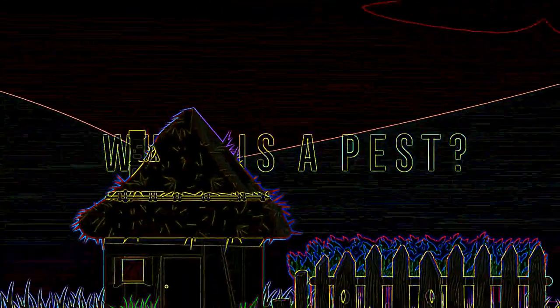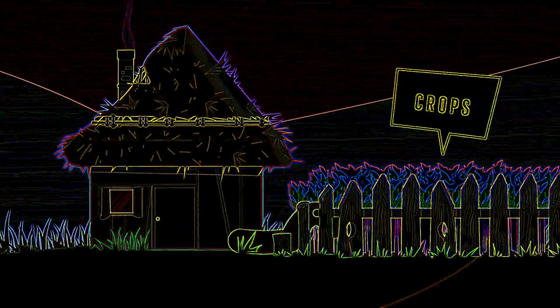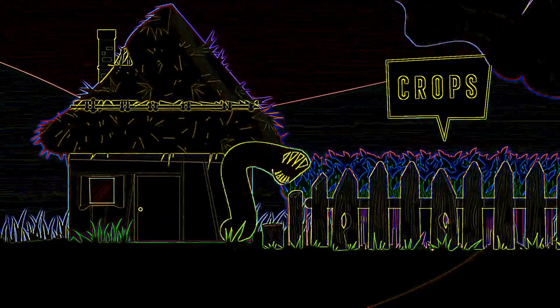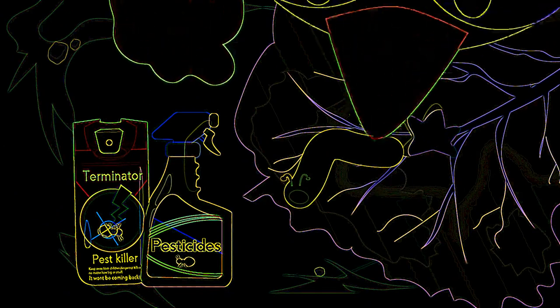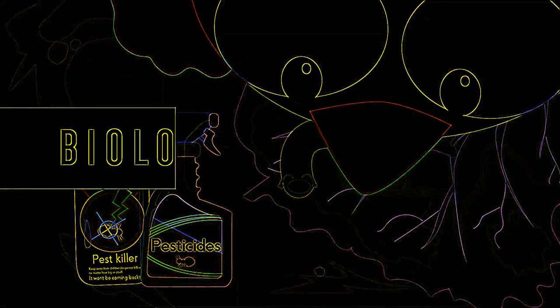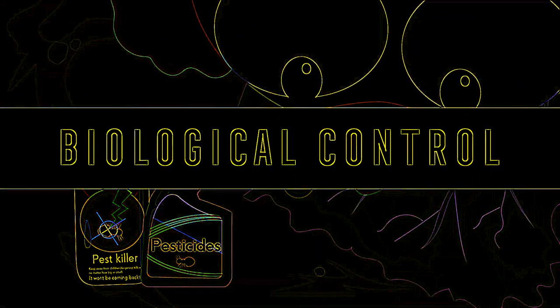What is a pest? Your annoying neighbour or sibling? A pest is an organism that eats or damages crop plants that are grown in agriculture. For example, slugs eating lettuce in my garden. Pests can be controlled using pesticides or by introducing other species, also known as biological control.